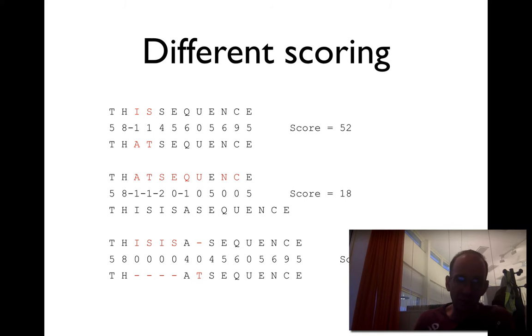if we use a scoring matrix that gives you, if two T's are aligned, it gives you a 5. If two H's are aligned, it gives you an 8. If an I is aligned to an A, we have minus 1, etc. So you see here what the scores are.